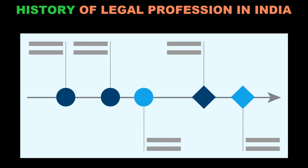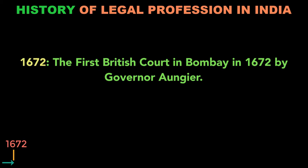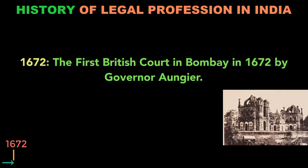Now we will review the legal profession on a timeline. Starting with 1672: the British court in Bombay was set up by Governor Angier.